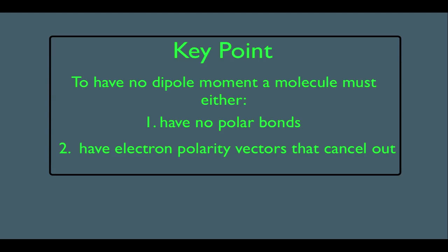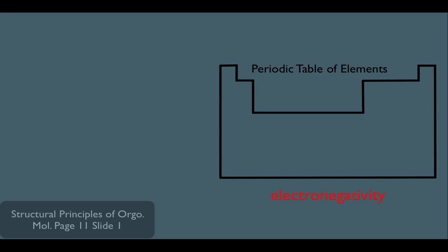Now, let's explain this. Remember, we learned in general chemistry the trend of electronegativity, and that is simply it increases as you move up and to the right on the periodic table of elements.